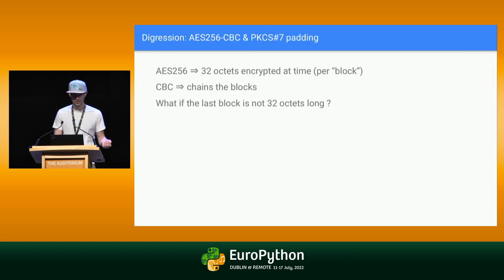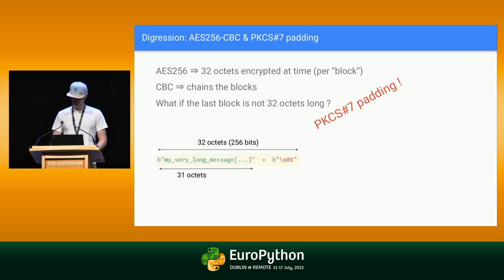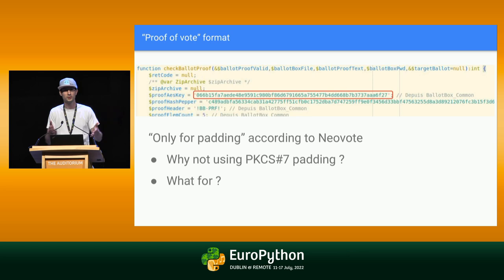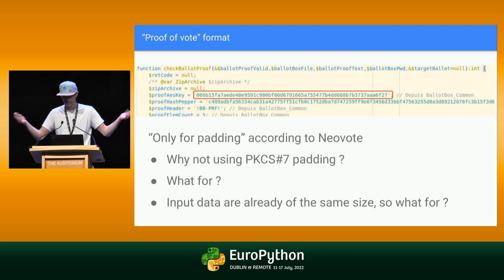Let's talk about padding. AES is block encryption — you encrypt 32 bytes at a time. If your last part is not long enough, you do padding. In AES there is something called PKCS7 for padding. The question is: why not use PKCS7 instead of using AES just for padding? It would be much more efficient and it wouldn't look suspicious with a hardcoded key. And why does the proof of vote need to be this size? We don't know, because there is no documentation.